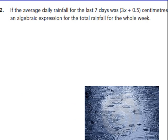If the average daily rainfall for the last 7 days was 3X plus 5/10 centimeters, write an algebraic expression for the total rainfall for the whole week. Okay. Average for 7 days. So the average is, to get an average, you take the sum divided by how many? We know that's 7. And that will equal the average. The average, they're saying, is 3X plus 5/10 centimeters.